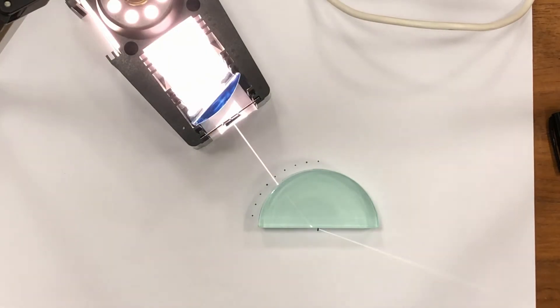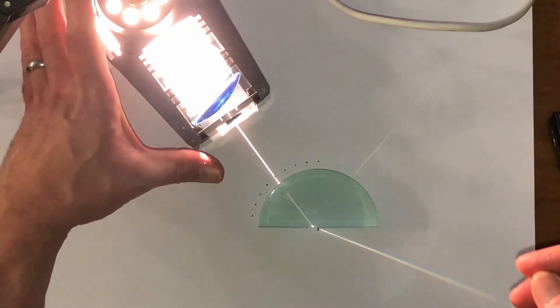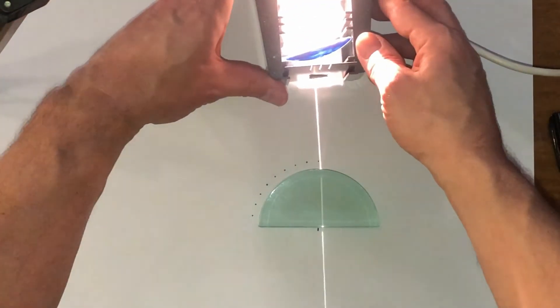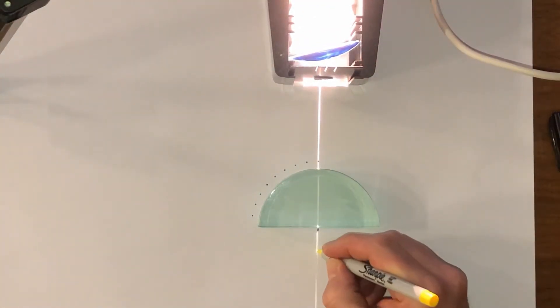I switch on the ray box and aim it at 90 degrees, being careful to line the ray up with the dot I've marked.